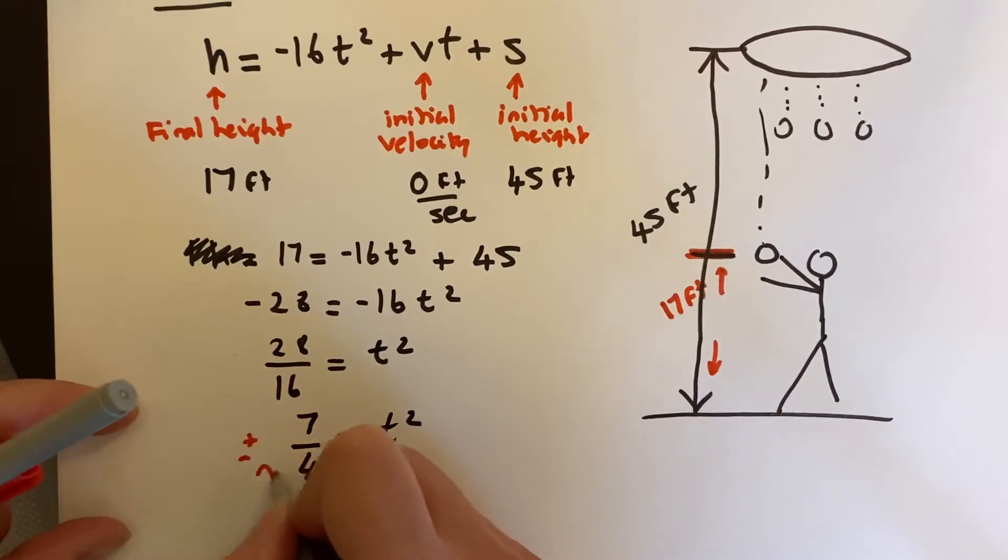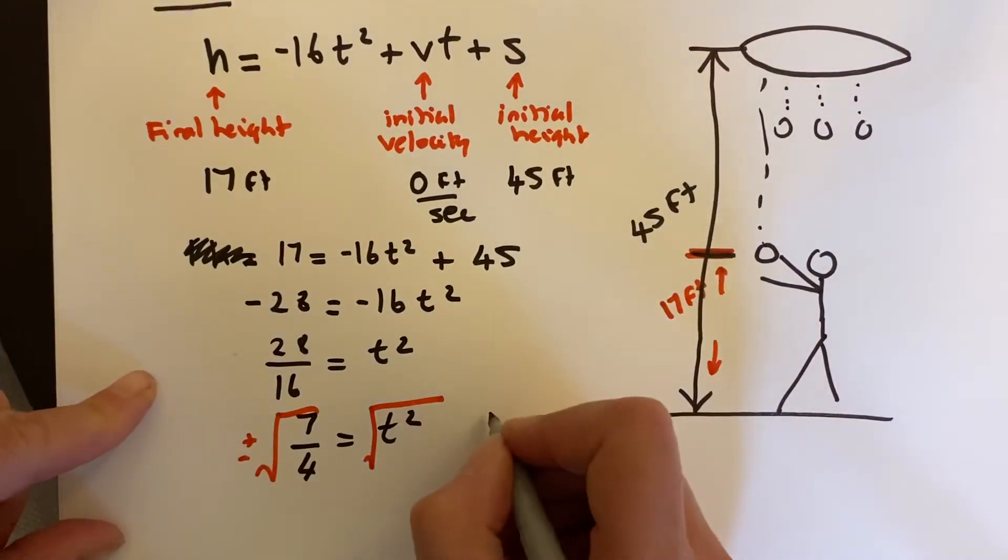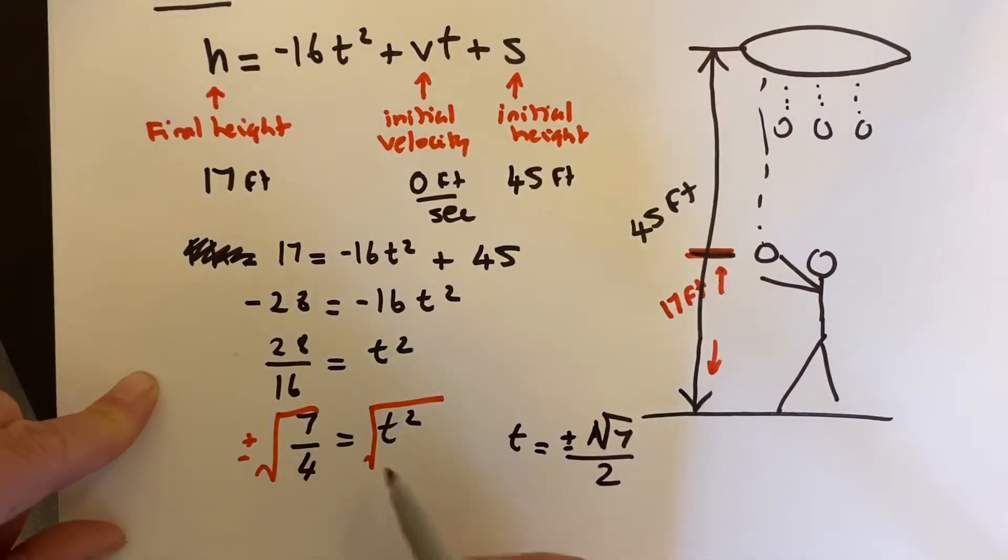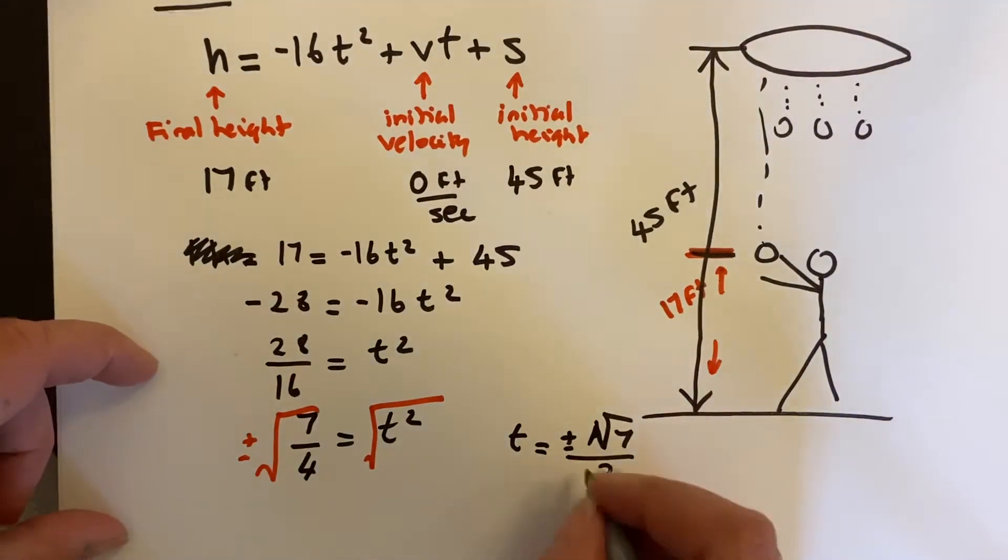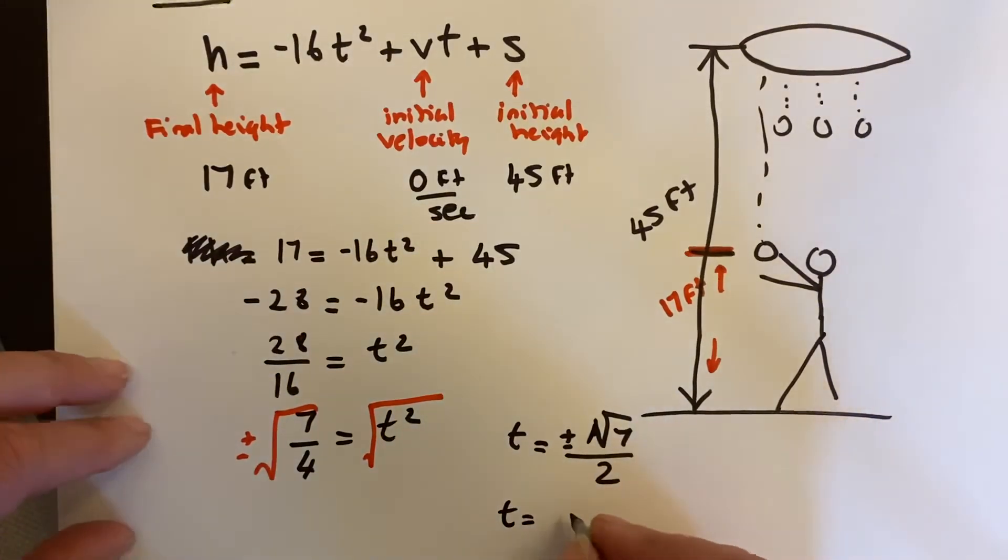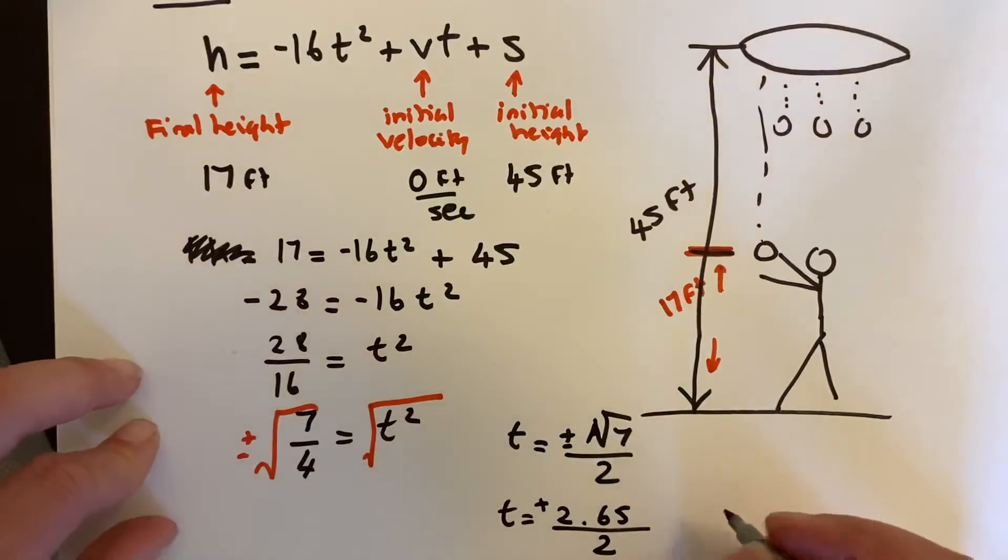Now I'm going to take the square root of both sides. I'm going to move over here because I'm running out of space. t equals plus or minus the square root of 7 over 2—the square root of 7 over the square root of 4, which is 2. If I work that out, square root of 7 is 2.65, so t equals 2.65 over 2, a positive number, and negative 2.65 over 2.